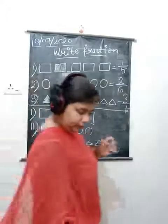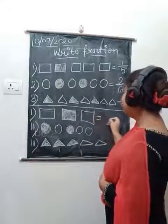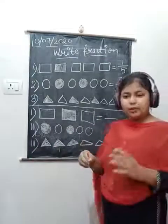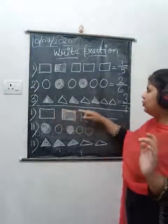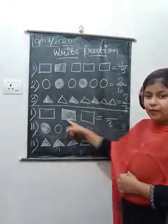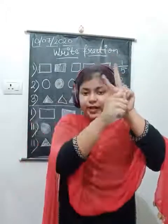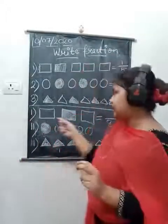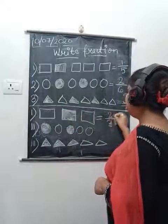Let us start. First, write down the total number of parts. Total parts: one, two, three - denominator is three. Among these, one part is shaded. So unshaded parts are two. Picture confirms: one, two - these two parts are unshaded. Fraction of unshaded part is two upon three.